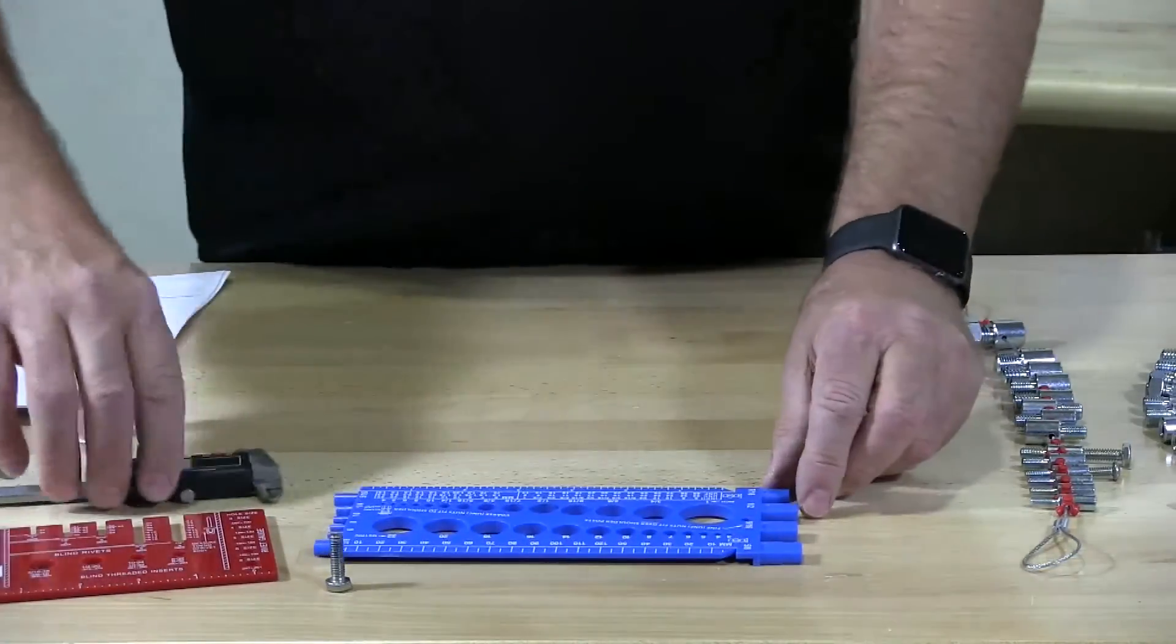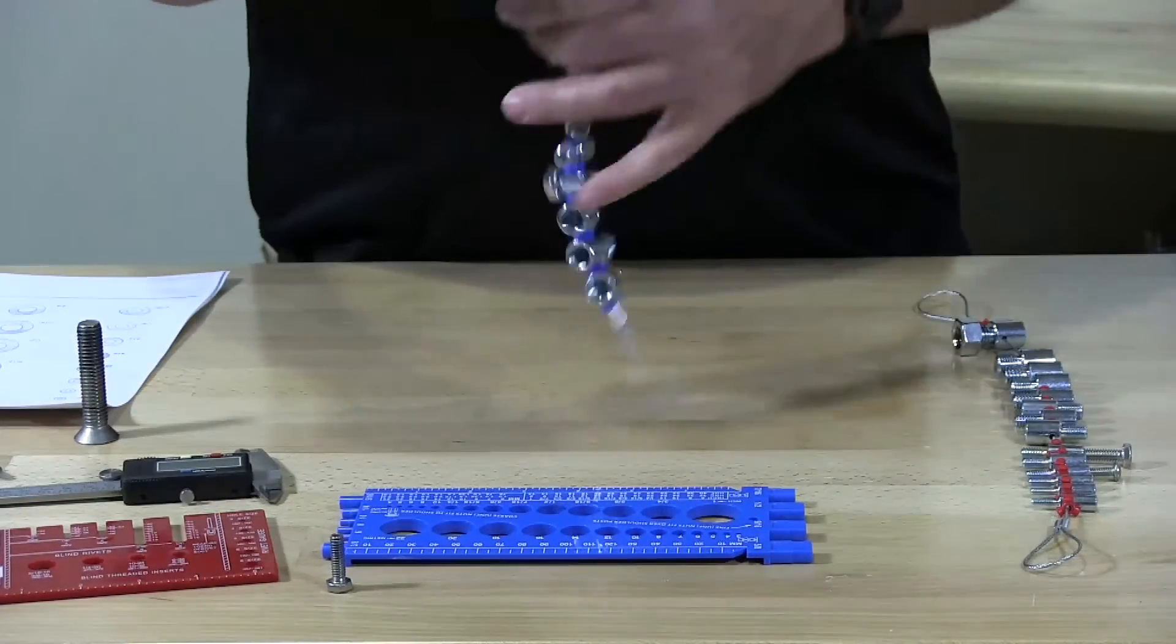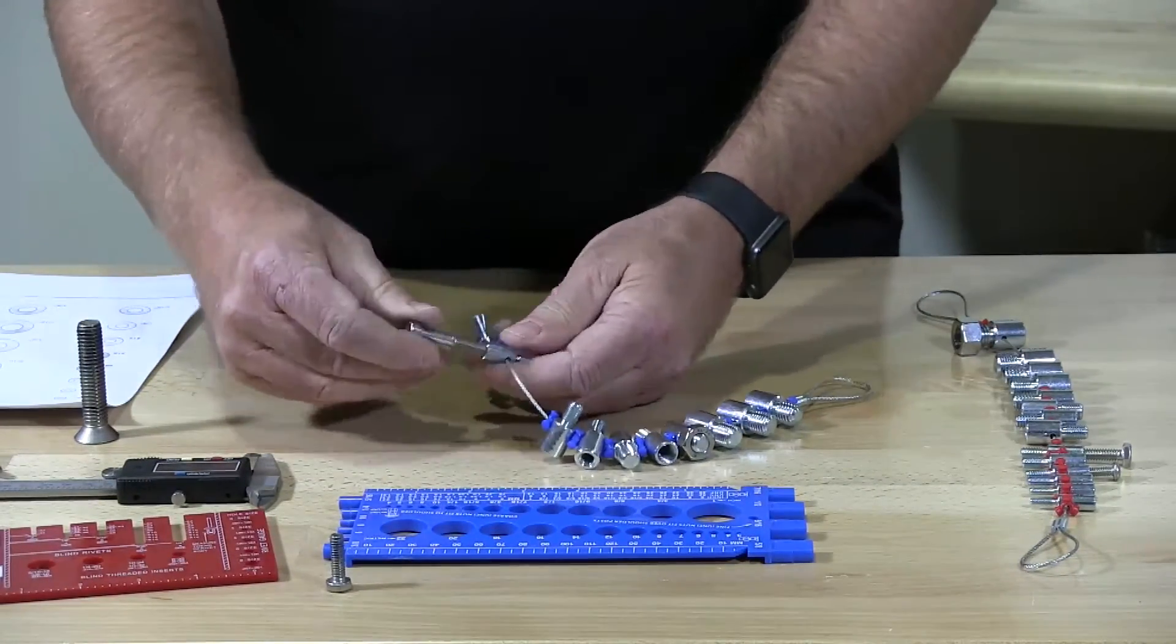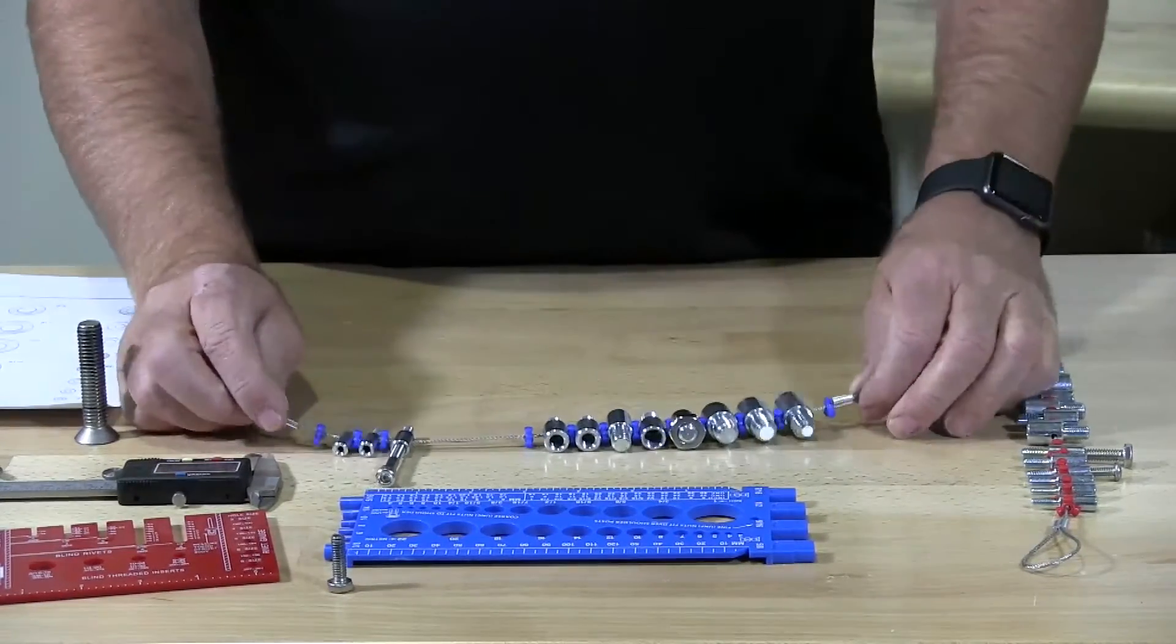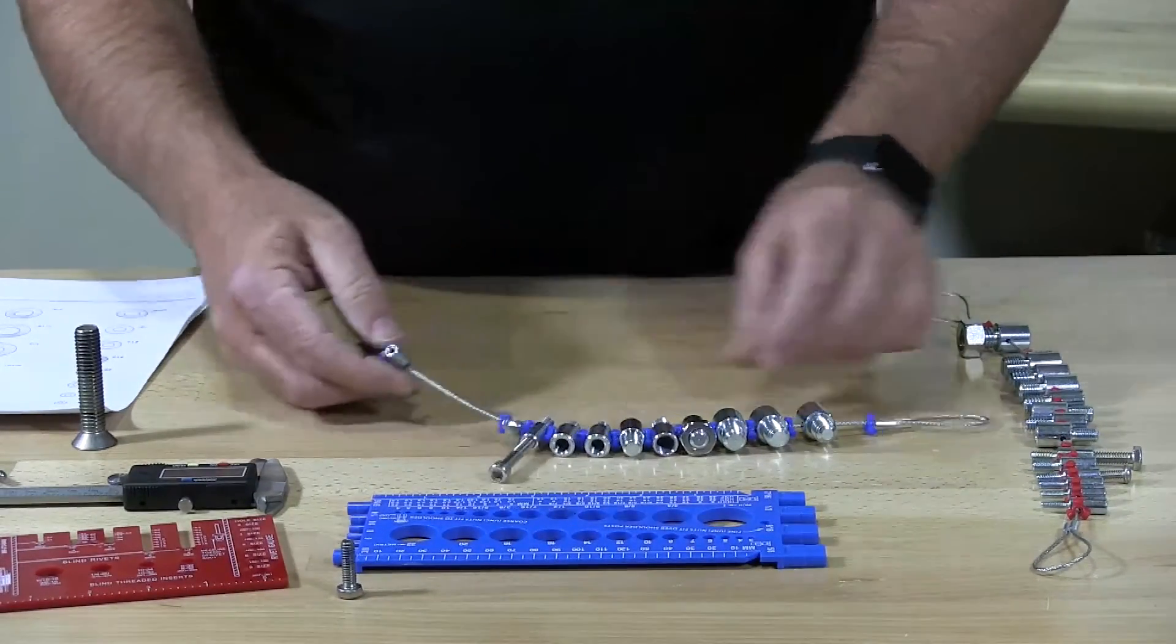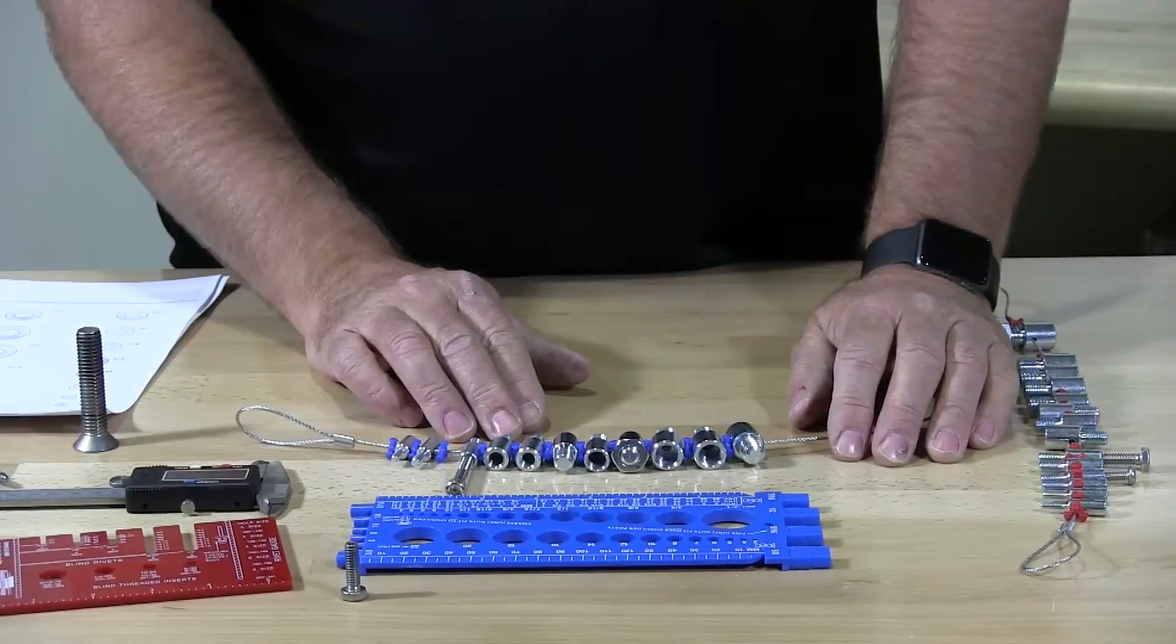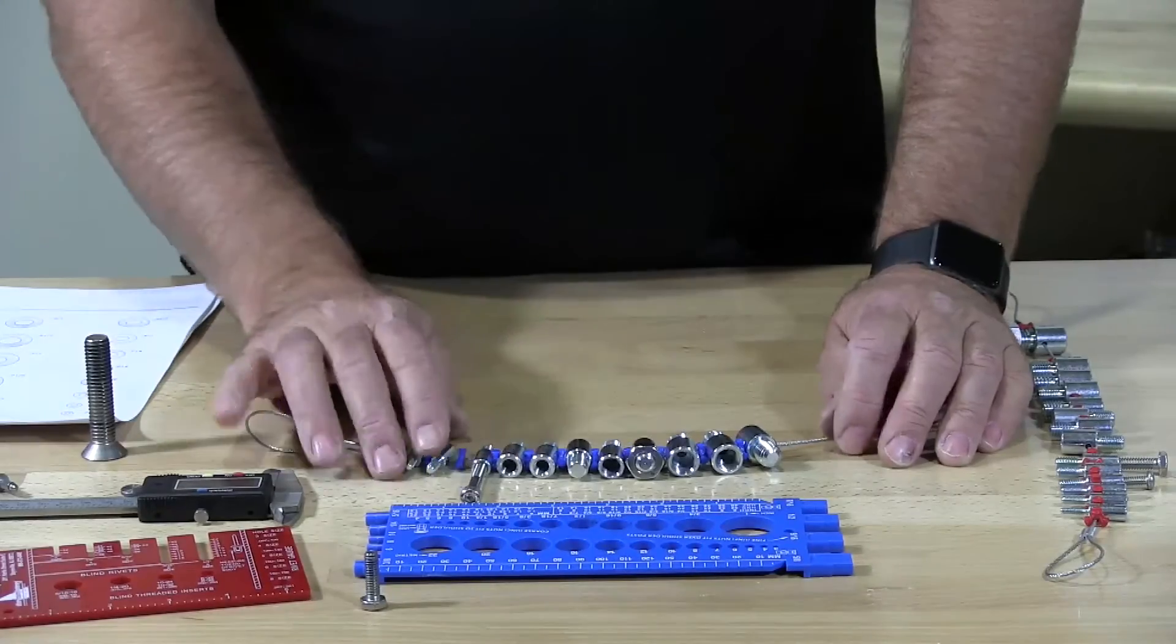We have this other gauge that will tell you that. This is another gauge where you can measure or find out what type of thread you have. And this is a metric. The metric goes from an M4 all the way up to M12. This also includes coarse, fine, and some super fine lengths.